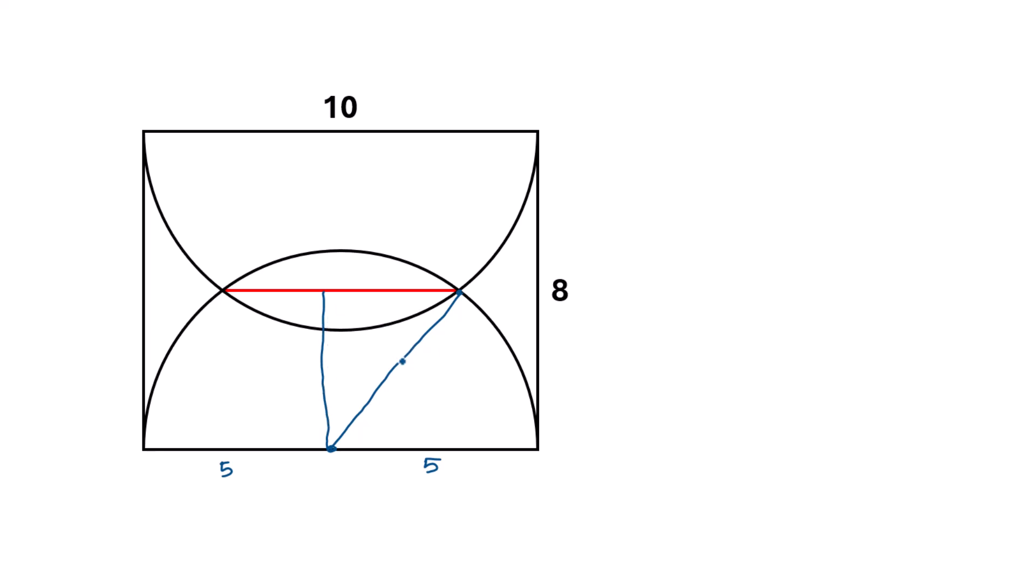Now this length will be 5 units because this line and this line indicate the radius of the circle, so this will also be the radius of the circle which is 5 units. And if we extend this red line...